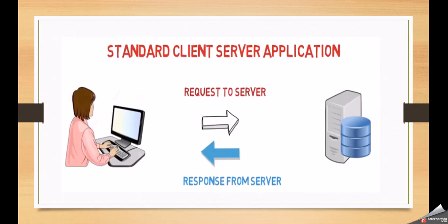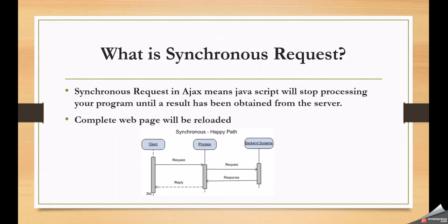The client can send a request to the server in two ways: one is a synchronous request and another one is an asynchronous request. Let us understand the differences between synchronous and asynchronous requests. In a synchronous request, when you perform any operation on the web page, the synchronous request goes to the server. Once the synchronous request is sent, your browser will be blocked until you receive a response from the server. You cannot perform any operation on the web page until the server sends a response back. Such a request is called a synchronous request.